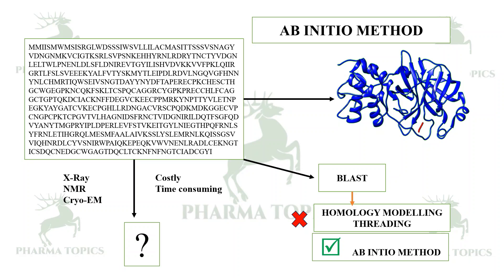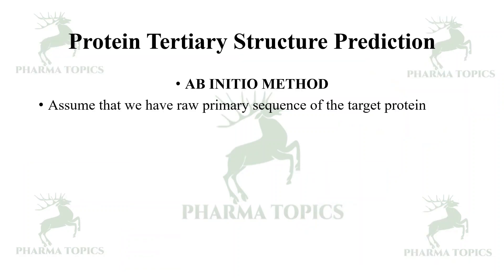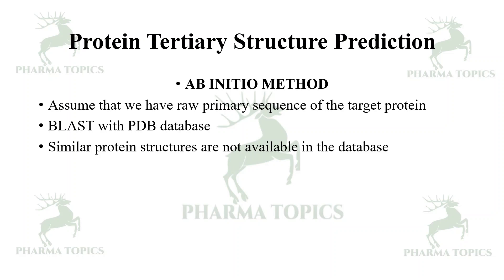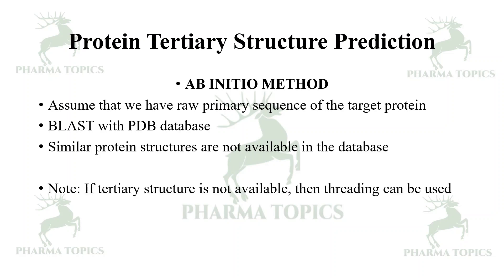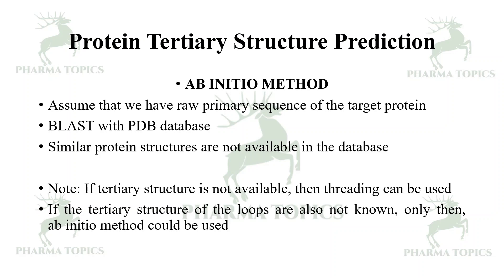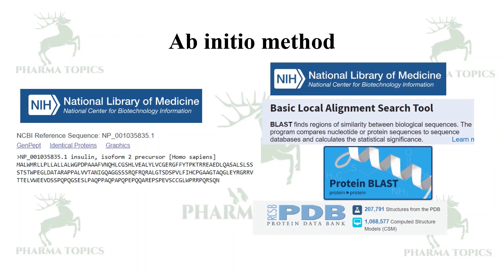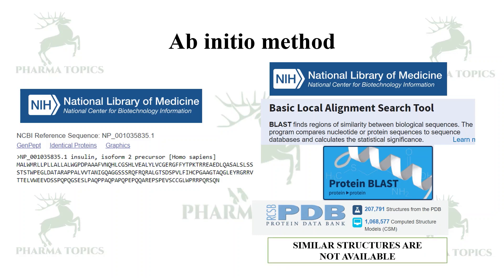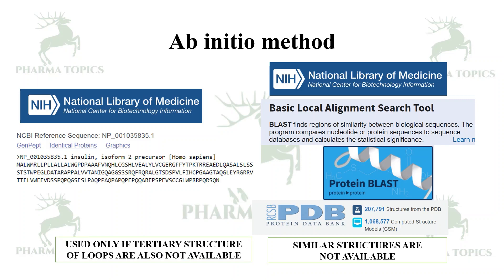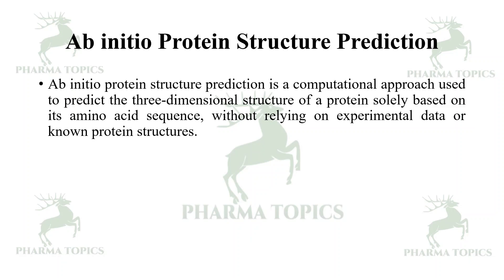In the ab initio method, we start with the raw primary sequence of the target protein and BLAST against the PDB database. If no similar protein structures are found, homology modeling cannot be done. Threading is possible only if loop structures are known. If neither is available, ab initio is used. You run a protein BLAST, and if no similar structures or loops are found, you proceed with ab initio.